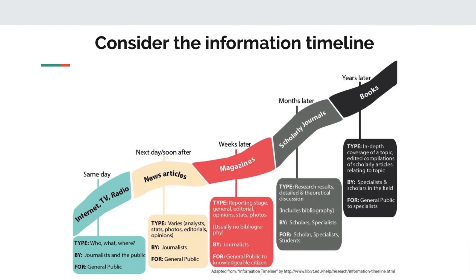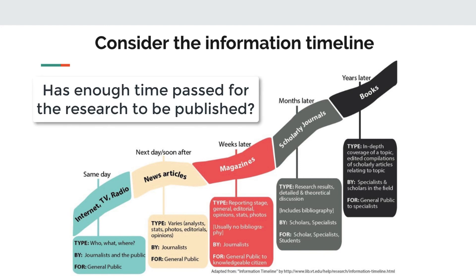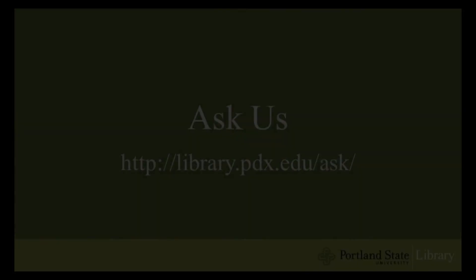Finally, I'd like to share one last tip for choosing a popular article, and that is to be mindful of articles reporting on current events. In this research timeline, notice that it can take months — yes, months — for researchers to collect, analyze, and publish a scholarly article. Even then, there is typically a lag time between when these articles are published in print and when they are available in library databases. Please take this into consideration when you're choosing your popular articles. Has enough time passed for the scientific research to be published?